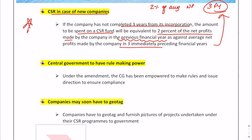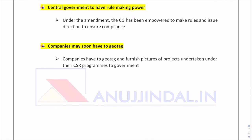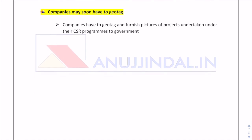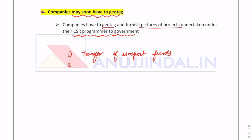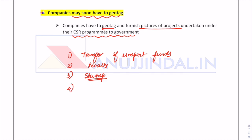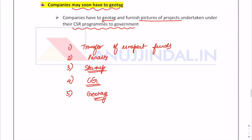The fourth amendment empowers the central government to make rules and issue directions to ensure compliance. The fifth amendment is that companies may soon have to geotag their CSR projects and furnish pictures of projects undertaken to the government. To summarize all amendments: transfer of unspent funds, penal liability, provisions for startups or companies not completing three years, central government powers, and geotagging.